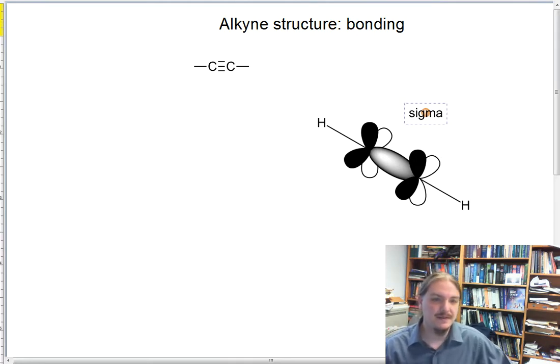The sigma bond is formed from the overlap of sp hybridized orbitals on each of the carbon atoms.